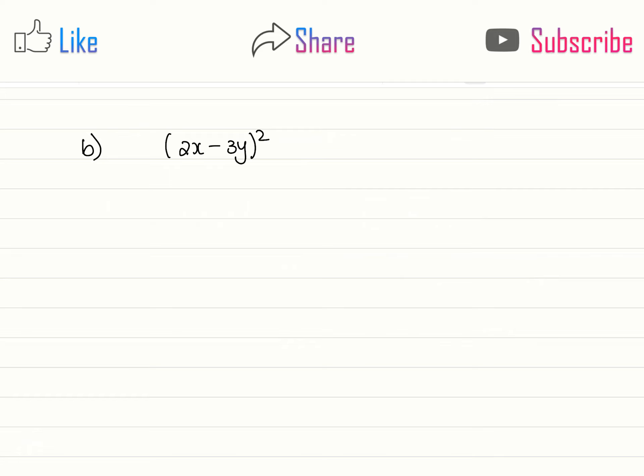In our second example we have 2x minus 3y squared. And again this is not equal to 4x squared minus 9y squared. So we simply do not take the square and apply it to every term.